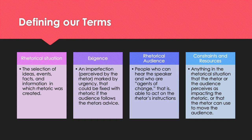Exigence — that's how that word is pronounced, the E is silent — exigence is an imperfection, as perceived by the rhetor, marked by urgency that could be fixed with rhetoric if the audience follows the rhetor's advice. So this is a pressing problem, and if you listen to me, it wouldn't be anymore. That is our exigence.